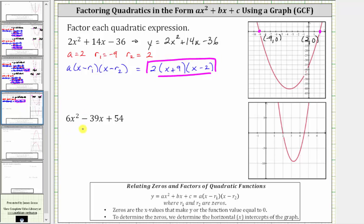Next, we have six x squared minus 39x plus 54. To factor this graphically, we graph y equals six x squared minus 39x plus 54, which I've already graphed here on the right. Notice how we have two horizontal intercepts. The ordered pair for one horizontal intercept is two comma zero. The ordered pair for the other horizontal intercept looks like it's 4.5, or four and a half, or nine halves — but let's go ahead and verify this using the TI-84.